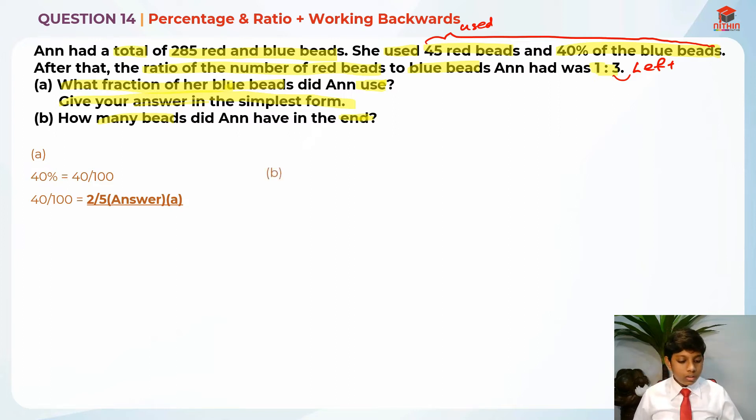For part B, I'm going to find for left the ratio. Red is to blue. The left is 1 is to 3. So this is basically in the end, it is 4 units. After that, I'm going to add whatever they used. 45 red and 40% of the blue beads. If I'm adding 40% of the blue beads here, that means that 3 units is supposed to be actually 60%.